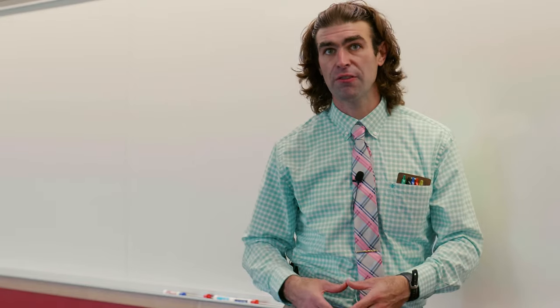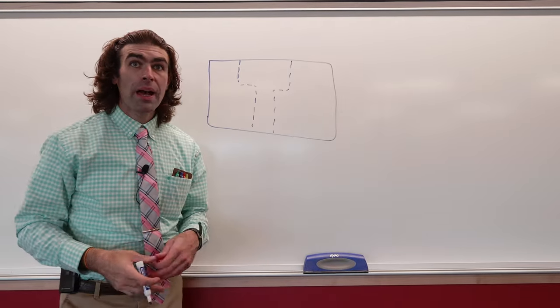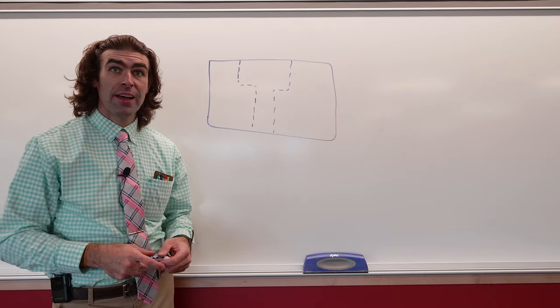This is really common for complex parts where you have a lot of views already. You can just show and dimension on a single view instead of creating a whole other section view. Let me show you how it works. Imagine we have a block with a counterbore hole through it. Right now I've got hidden lines.